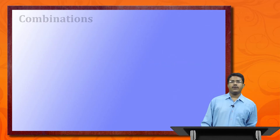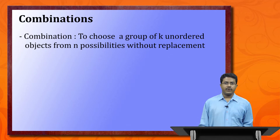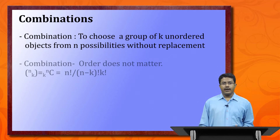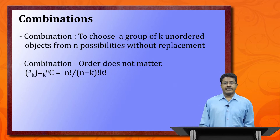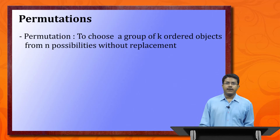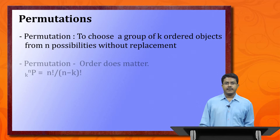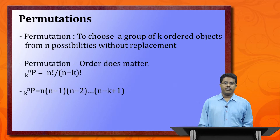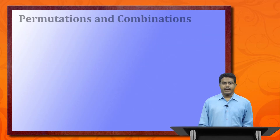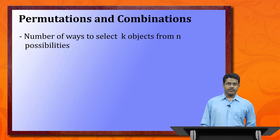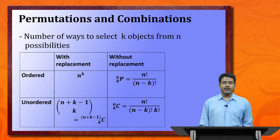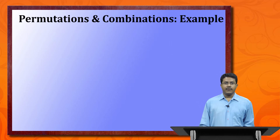Combination means choosing a group of k objects from n possibilities without replacement where order does not matter. The formula is nCk = n! / [(n−k)! × k!]. Permutation means choosing k ordered objects from n possibilities without replacement where order does matter. The formula is nPk = n! / (n−k)!, which expands to n × (n−1) × (n−2) × ... × (n−k+1). A summary table can categorize all cases by ordered/unordered and with/without replacement.